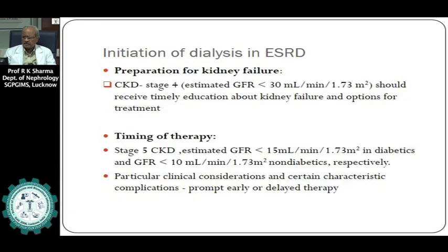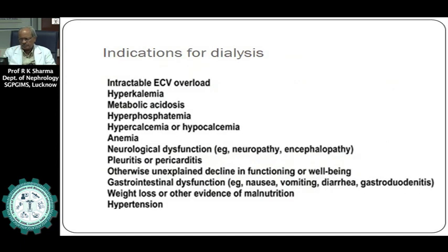Historically, the earliest dialysis was done in the 18th century when a Scottish professor of chemistry invented the fundamental process of separating solutes using a semi-permeable membrane, and he coined the word dialysis. For treating kidney failure practically, in 1916, Abel performed dialysis in experimental animals—rabbits and dogs—using a celloidine membrane and a leech extract, with hirudine as an anticoagulant.